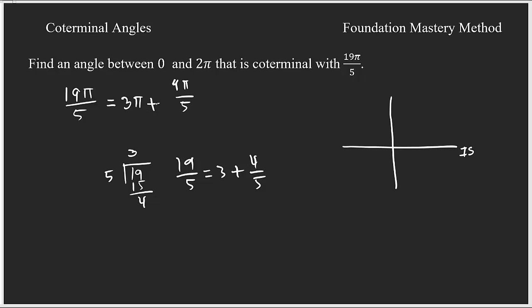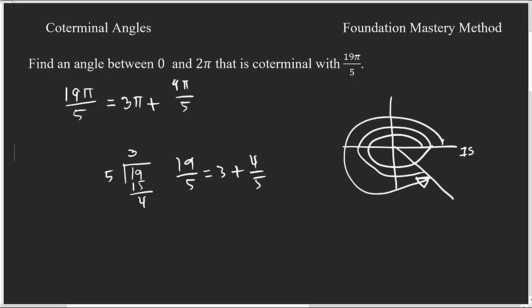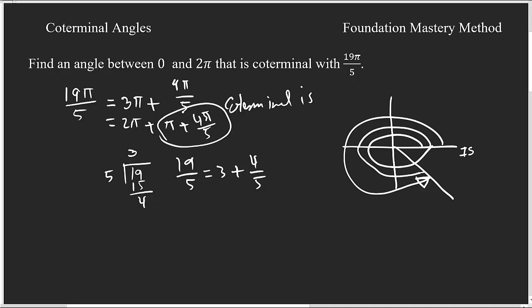From 3π we can extract one complete rotation of 2π, leaving one more π, plus 4π/5 still remaining. So the coterminal is 2π + π/5 + 4π/5, which simplifies to 9π/5. This is between 0 and 2π, so 9π/5 is the coterminal angle. Remember, to find a coterminal you always skip multiples of 2π — one complete rotation.